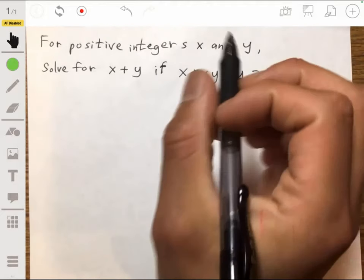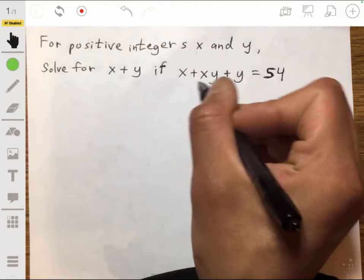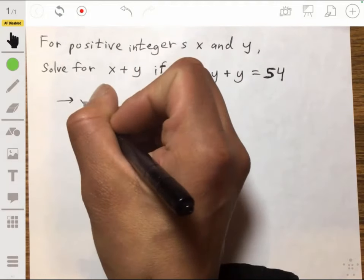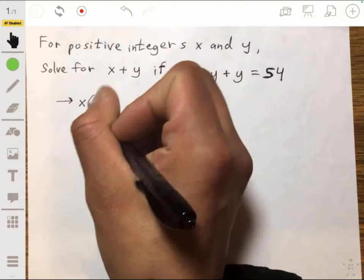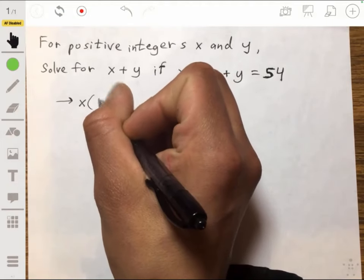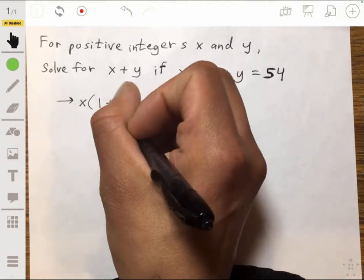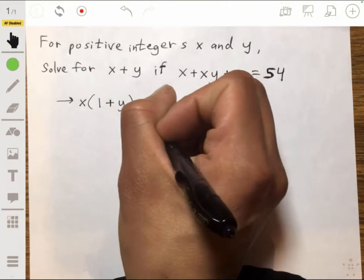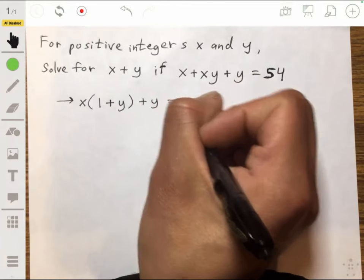So one strategy is to start off by factoring out the x here. So we would get x times 1 plus y, plus y equals 54.